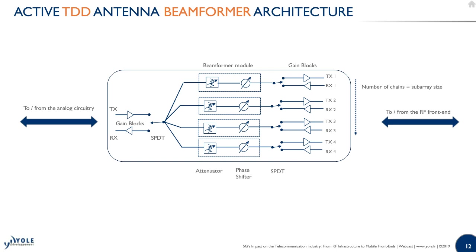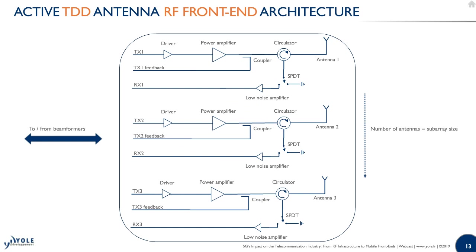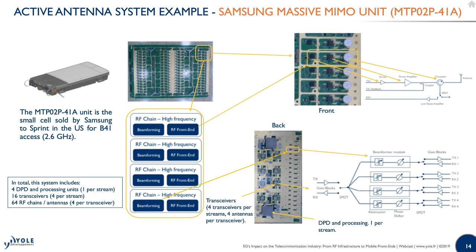This adds 64 low-power RF switches and 128 gain blocks not featured in the remote radio head. On the amplification part, you only need two stages — driver and power amplifier — but the architecture is repeated 64 times. Lower power components but in higher numbers. As an example for band 41, the Samsung massive MIMO unit features 64 RF chains, 64 beamformer modules linked to 16 transceivers and four DPD processing units.